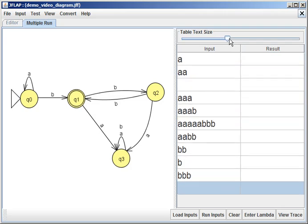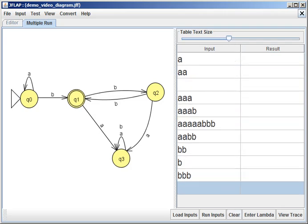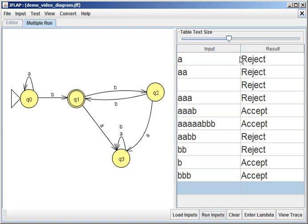And I can also make the text size a bit bigger. And then I can just say run inputs and it tells me accept, reject, reject, reject, right? All through it tells me what's going on. It doesn't actually write a lambda here. We just have to know if it's blank, it's saying the empty string.